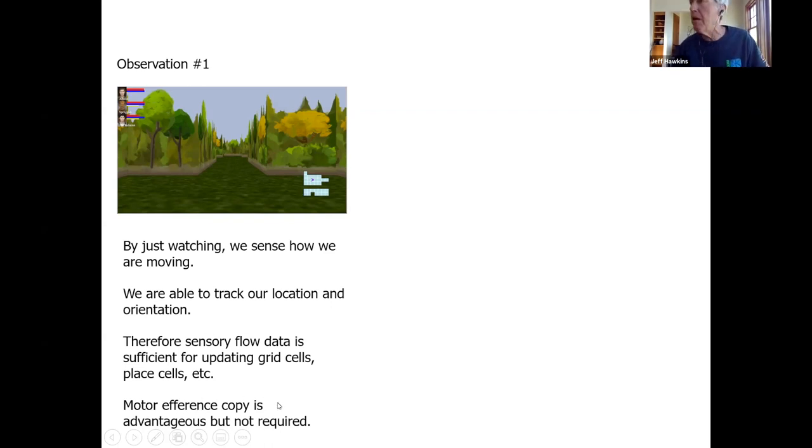Just by watching, we sense how we're moving, we're able to track our location and orientation. Therefore sensory data flow is sufficient for updating grid cells, place cells, etc. The motor efference copy is advantageous but not required. It's useful to know what movements I'm generating because that's faster than relying just on sensory data.